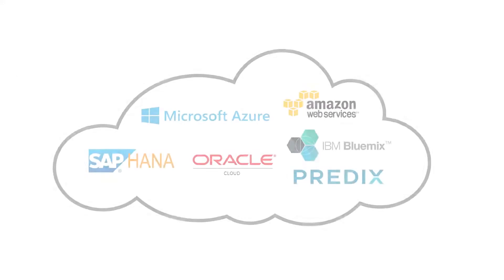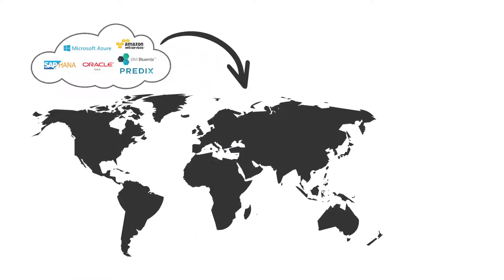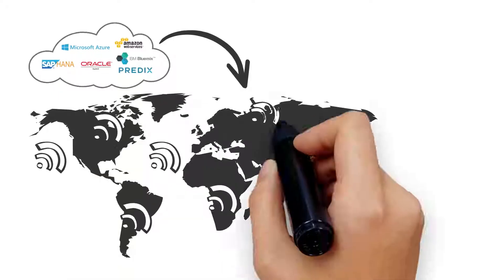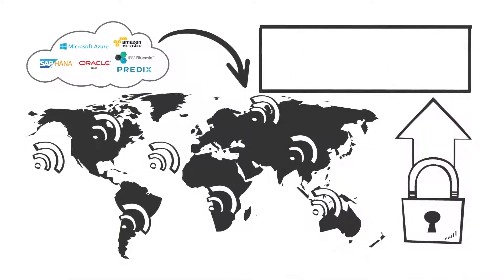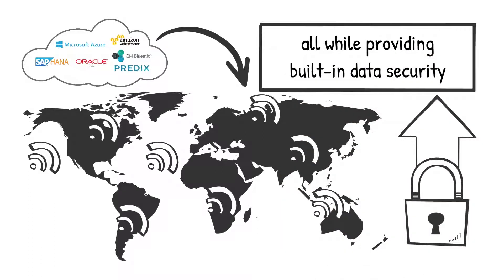FDI and OPC UA deliver access to plant data from across the globe, allowing corporate offices and subject matter experts to optimize assets and stay ahead of the competition, all while providing built-in data security.